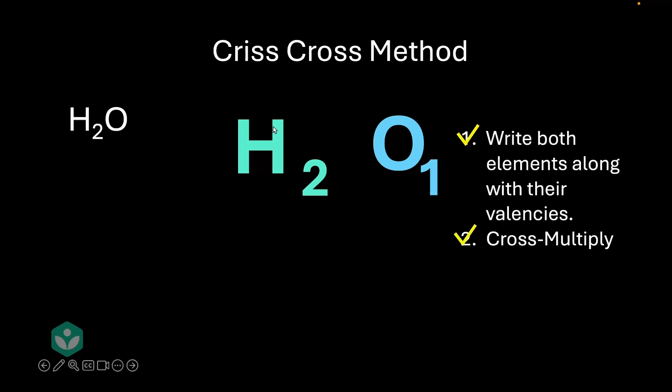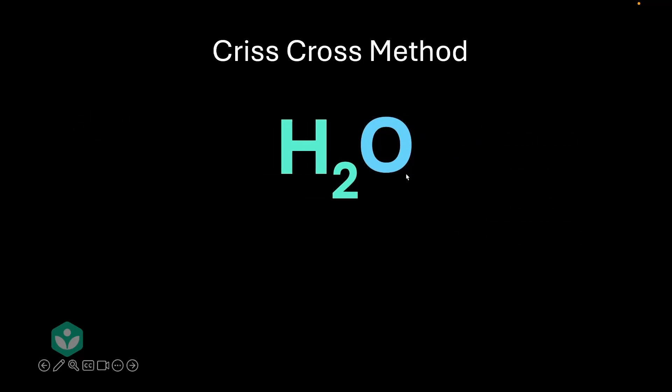We've arrived at the molecular formula H2O1. Think about it. This one is kind of redundant, so we're going to get rid of that. Okay, so we're left with H2O. What does H2O tell us? It tells us that every molecule of water or every molecule of H2O has two hydrogen atoms and one oxygen atom.